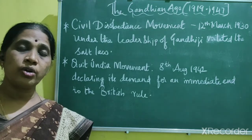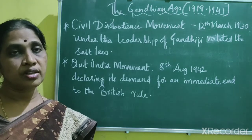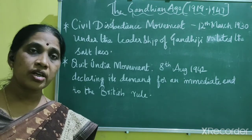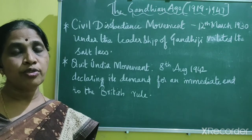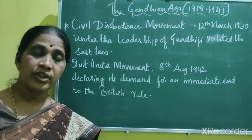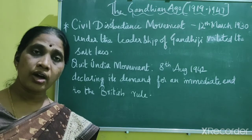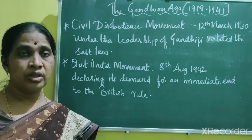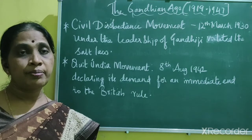Gandhiji, in order to start the movement against this, came up with the idea of the Dandi March and launched the Salt Satyagraha on 12th March 1930. Gandhiji with his 78 followers left Sabarmati and reached Dandi on the west coast of Gujarat. They walked around 375 kilometers in 25 days and violated the salt law by preparing salt.